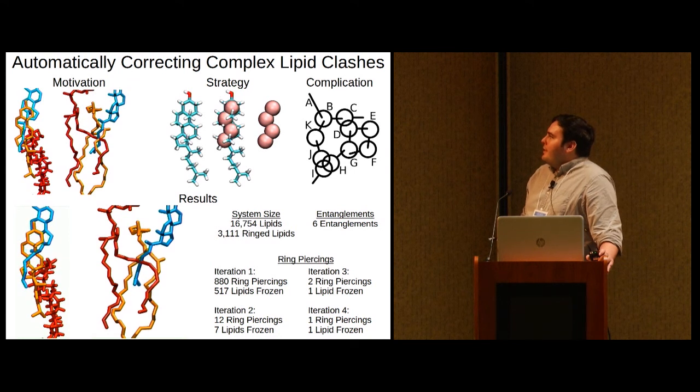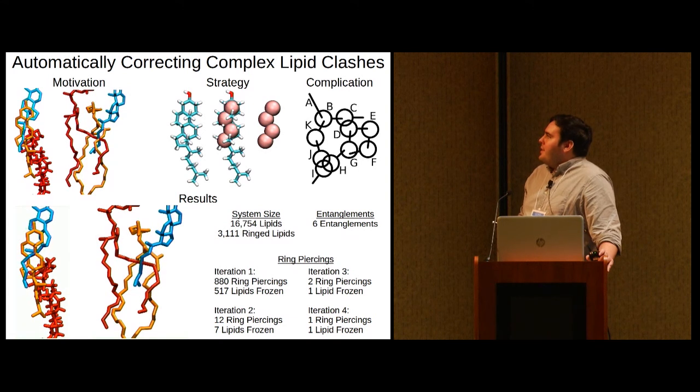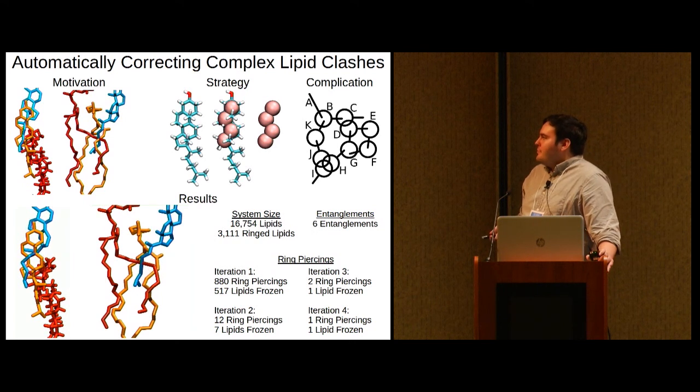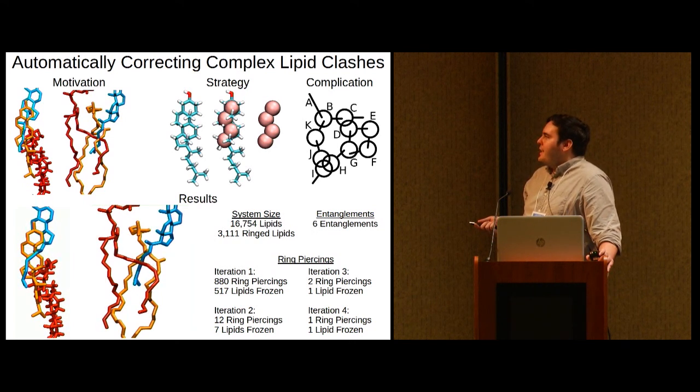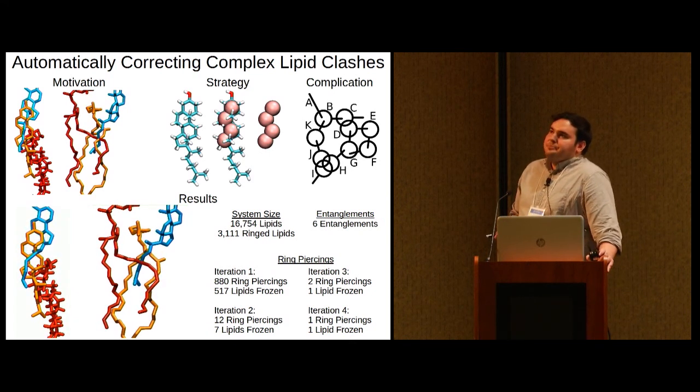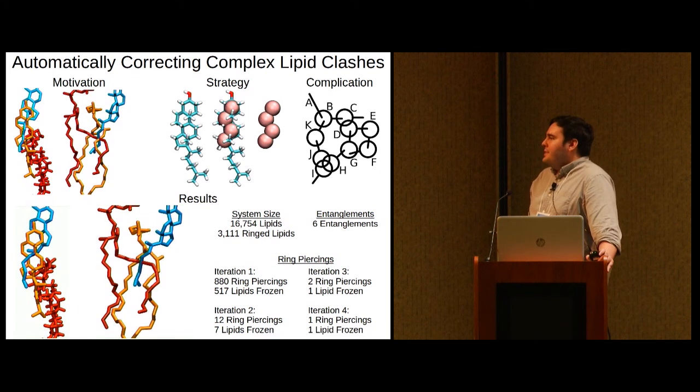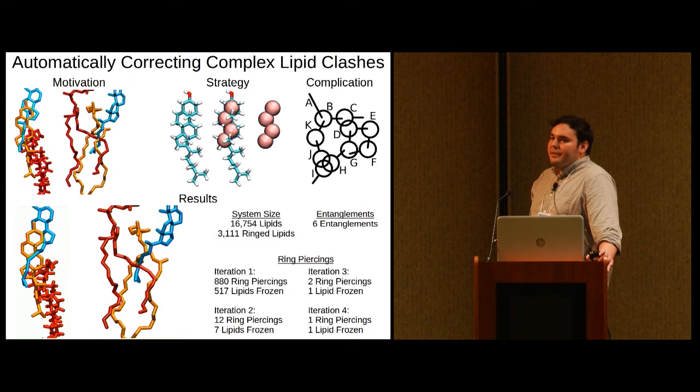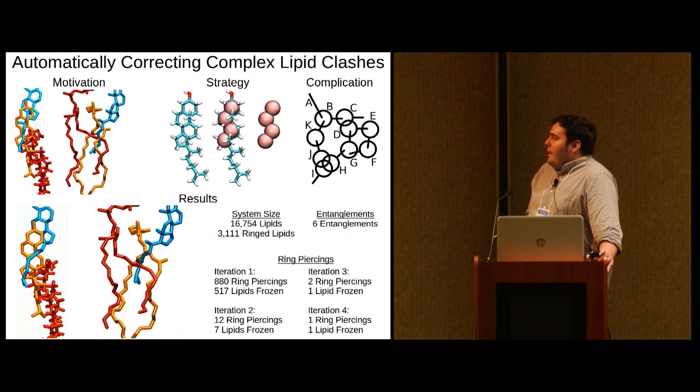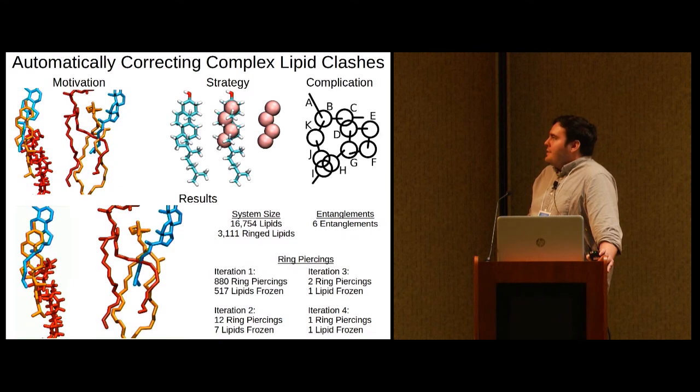There's a complication involving networks of ring piercings shown schematically here that makes our approach for fixing ring piercings inherently iterative. And for the small synthetic system, which contains about 17,000 lipids, of which about 3,000 are ringed, XMIS Builder initially detected 880 ring piercings. And through four steps, each requiring only 500 steps of minimization, we were able to eliminate all the ring piercings. After this, XMIS Builder detected six lipid entanglements, which we were able to fix with an additional 500 steps of minimization.